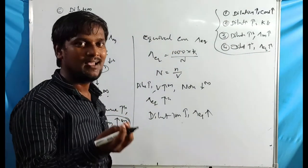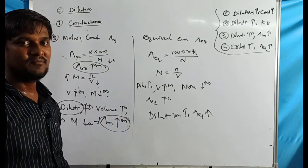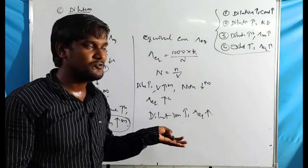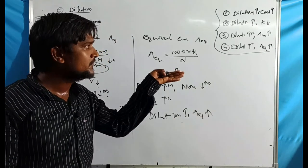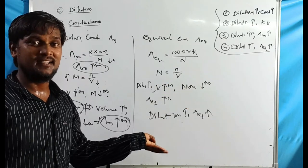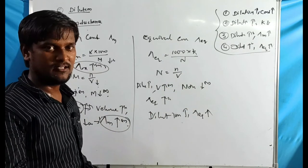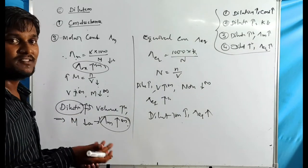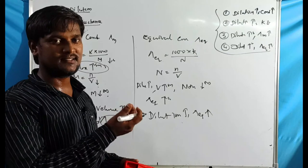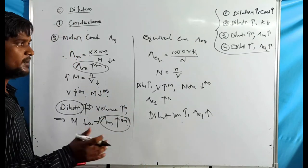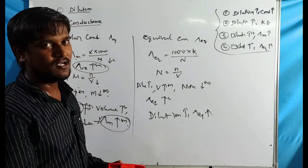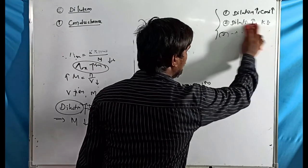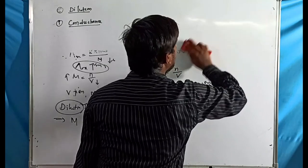To summarize the four key points on dilution: (1) conductance increases, (2) specific conductance decreases, (3) molar conductance increases, (4) equivalent conductance increases. These are very helpful for exam questions asking which quantity increases or decreases upon dilution.